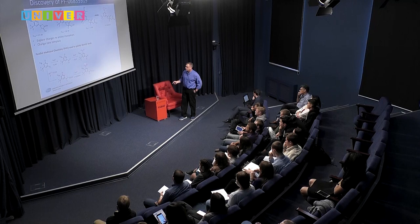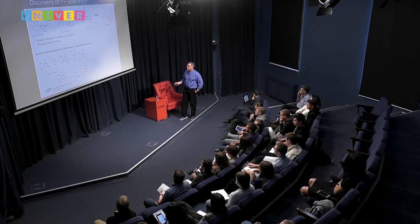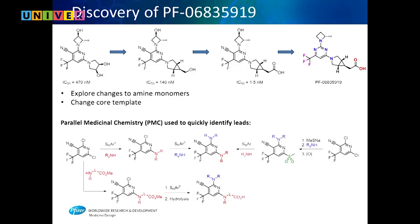Then we bring in maybe another hundred amines on this side, do the same analysis, and make a thousand compounds this way. Or if we want to change reactivity — bring in thiomethane and attack at this chlorine, then oxidize to SO2, which leaves through SNAr. This way you can do this one first and this one second, as opposed to the other order — this is using chemistry to change the selectivity of reactivity.